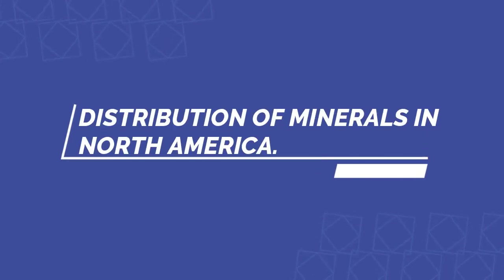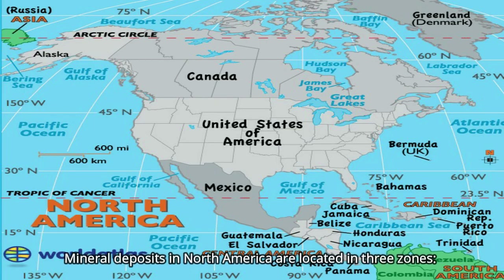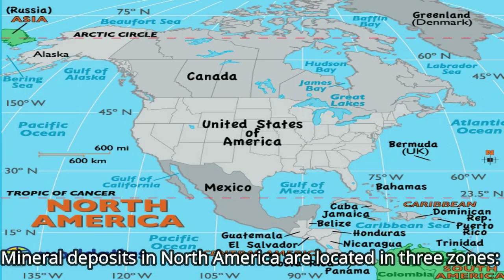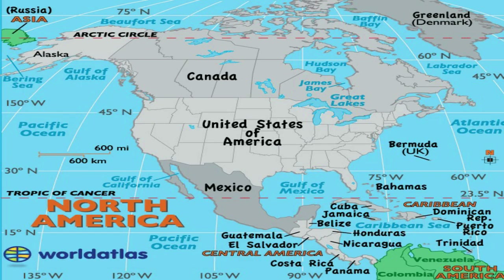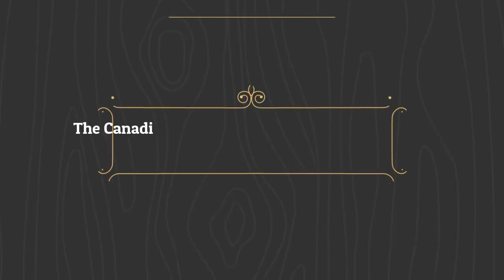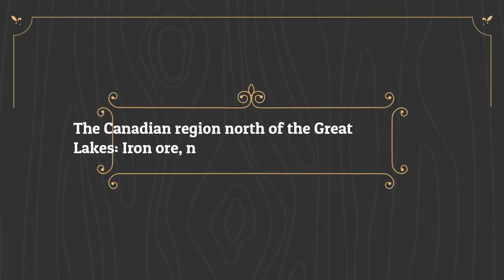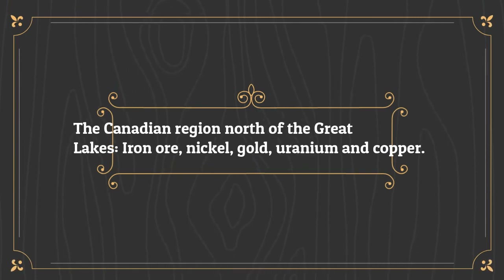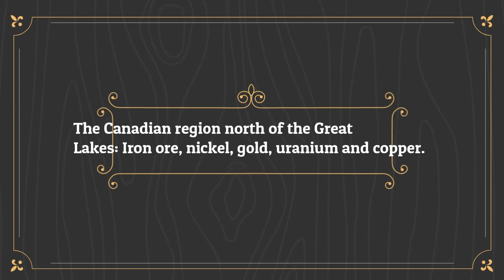Now let us know about the distribution of minerals in North America. In North America, the mineral deposits are located in three zones. Number one is the Canadian region north of the Great Lakes, where deposits of iron ore, nickel, gold, uranium, and copper are found.